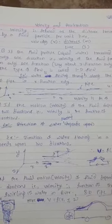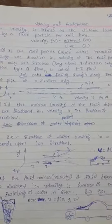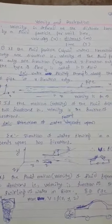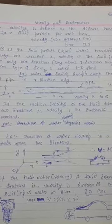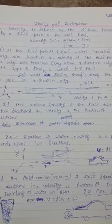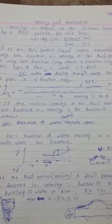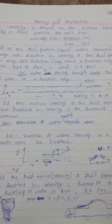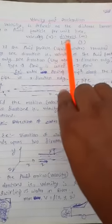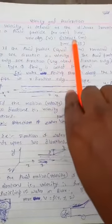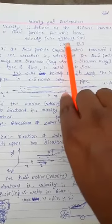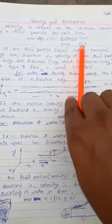Good evening everyone. My name is Umesh Kumar from Dijay Mati Mudola Engineering College. Today we will discuss velocity and acceleration. Velocity is defined as the distance traveled by an object or particle per unit time. So velocity — distance is in meters and time is in seconds.